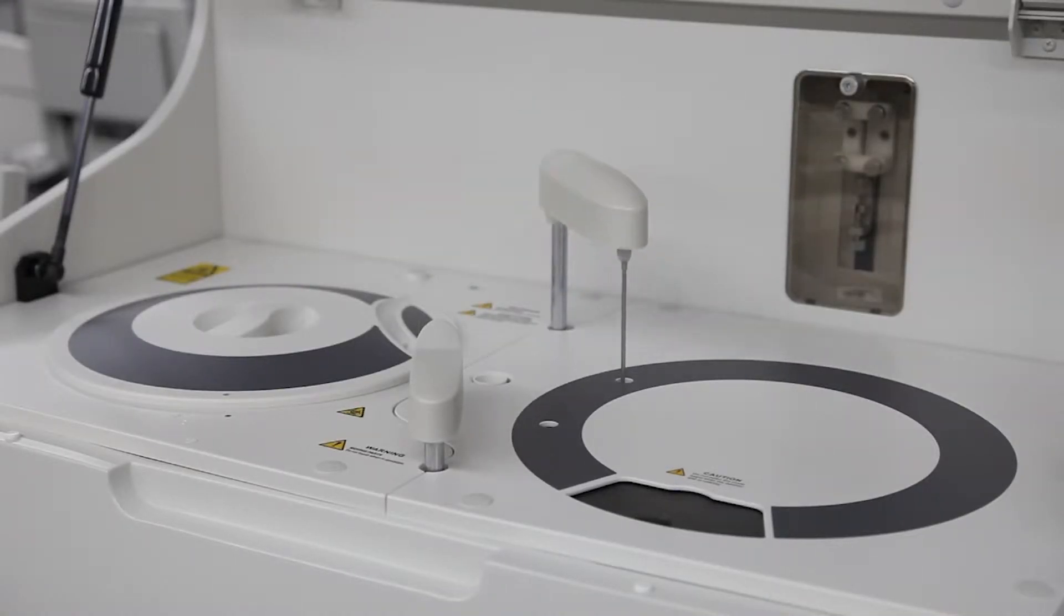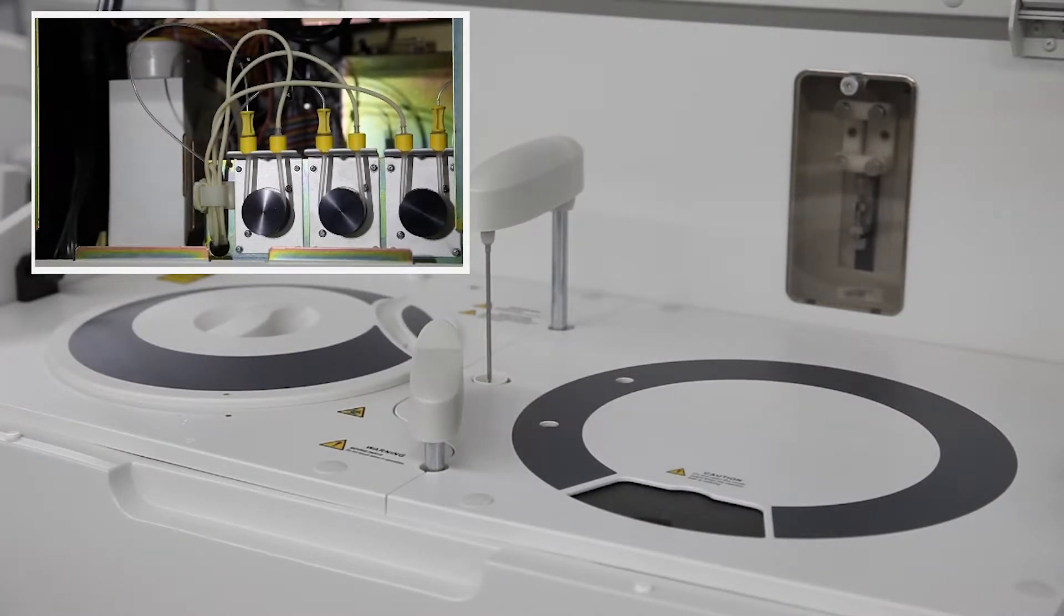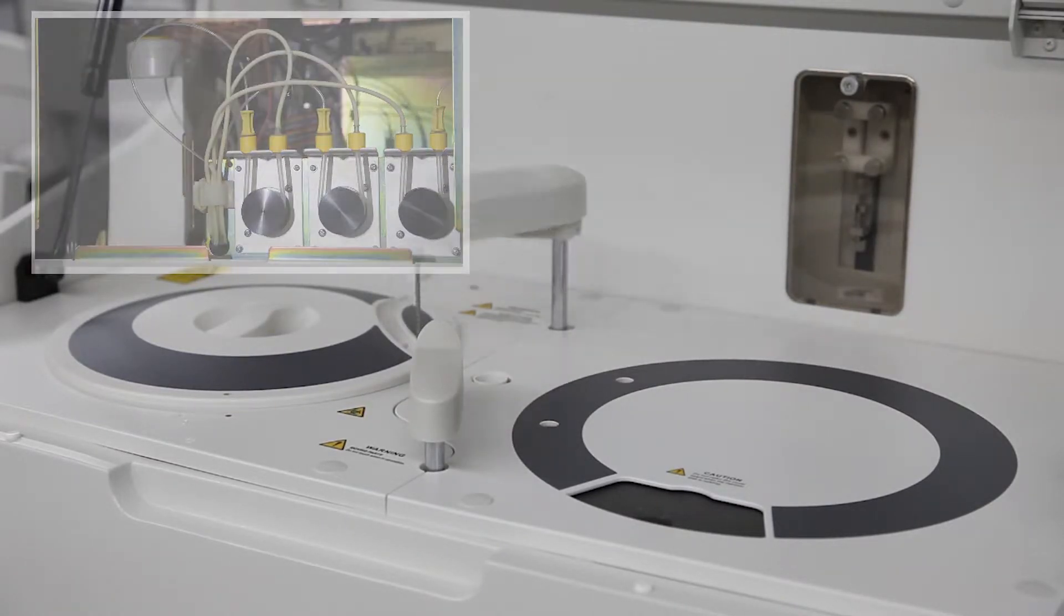The BS200 offers 200 tests per hour throughput. With the optional ISE module, it enhances the throughput to 330 tests per hour.